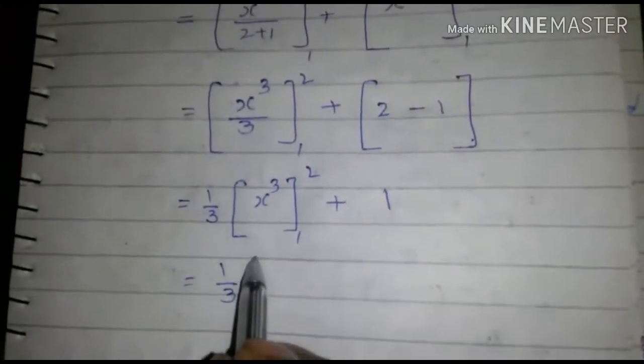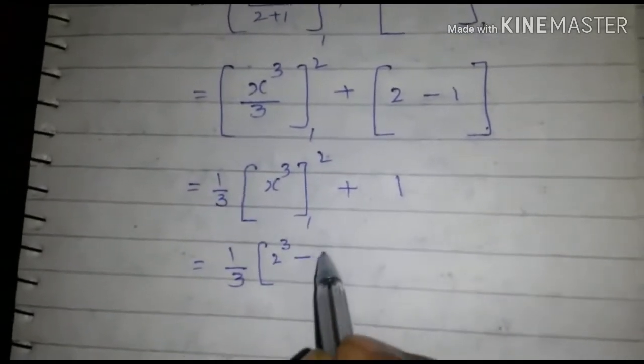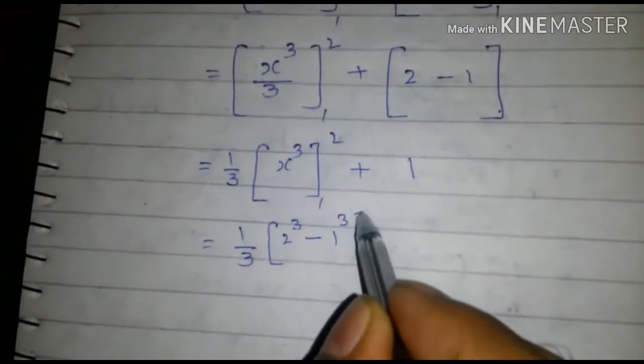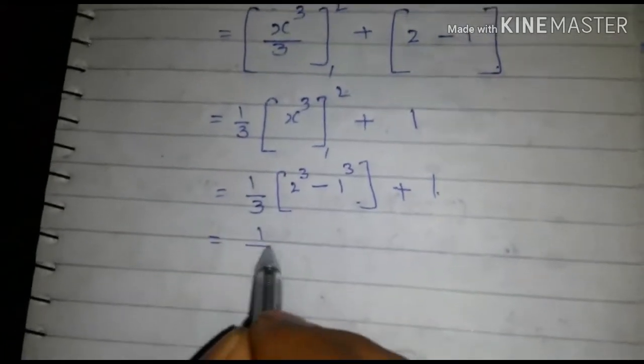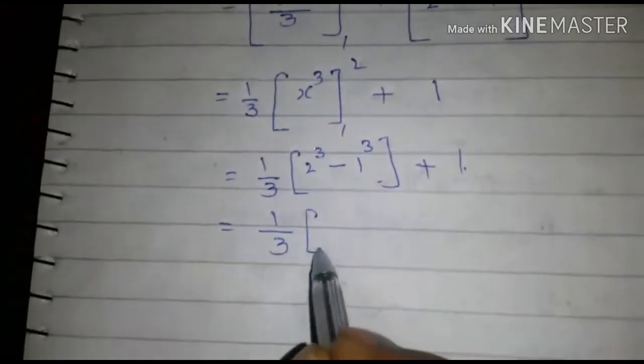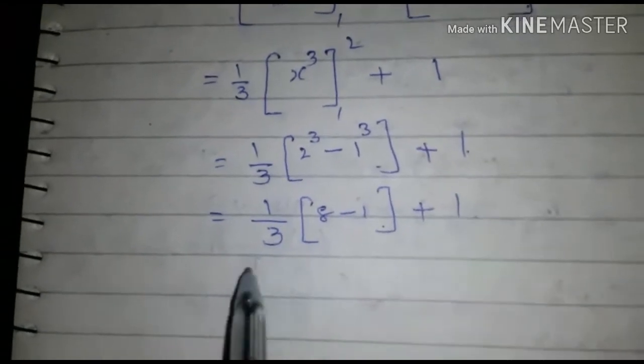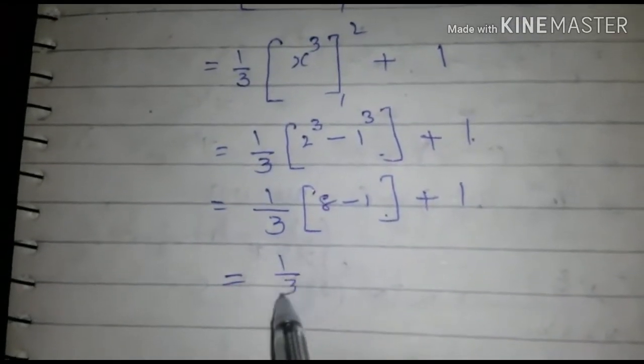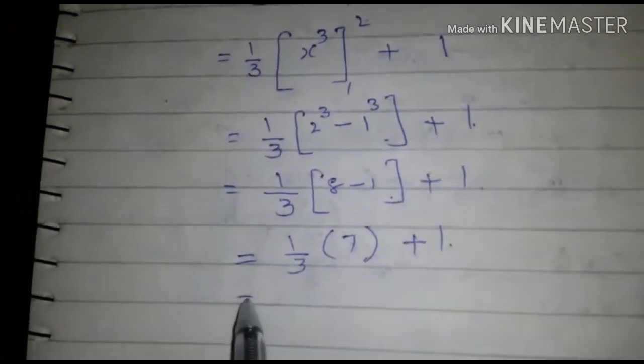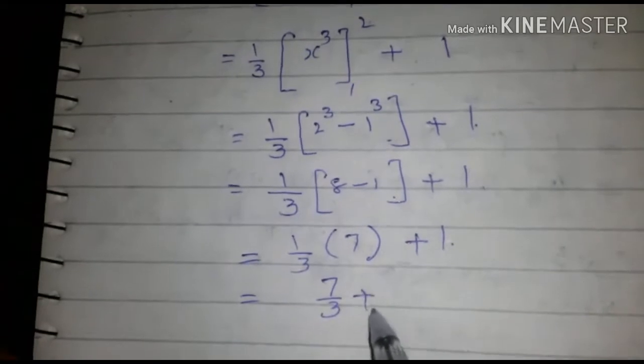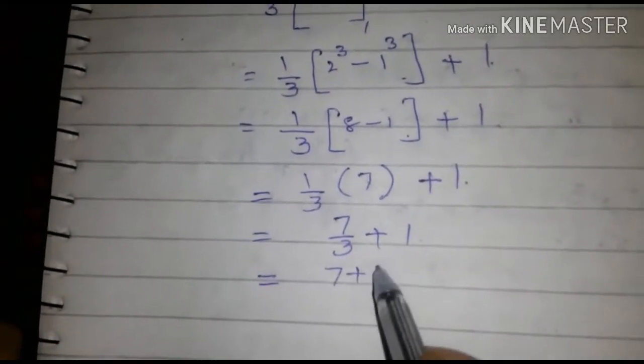1 over 3, 2 to the power 3 minus 1 to the power 3 plus 1. This is equal to 1 over 3, 8 minus 1 plus 1, 1 over 3 into 7 plus 1, 7 over 3 plus 1, 7 plus 3.